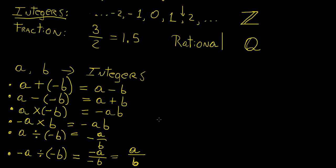Those are the basic operations: addition, subtraction, multiplication, and division. We know from the rules of arithmetic that anything in parentheses — any operations inside the brackets — we should always do those first, followed by any powers, then division, multiplication, addition, and then subtraction. So let's do a few examples just to get you a little bit more comfortable with this idea. This is all pretty much revision of what you should know, but in case you have forgotten, let's say you have the following operation.